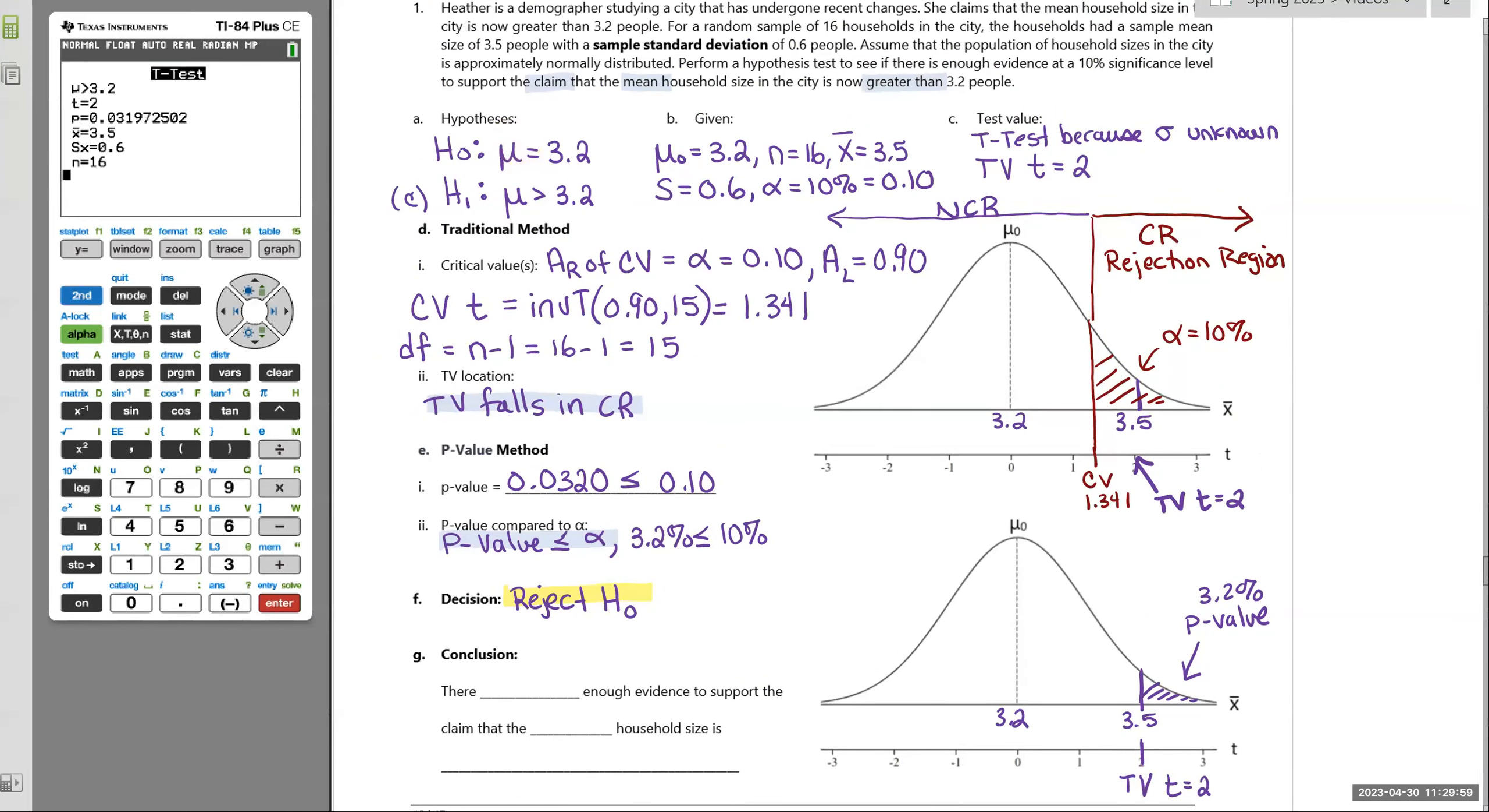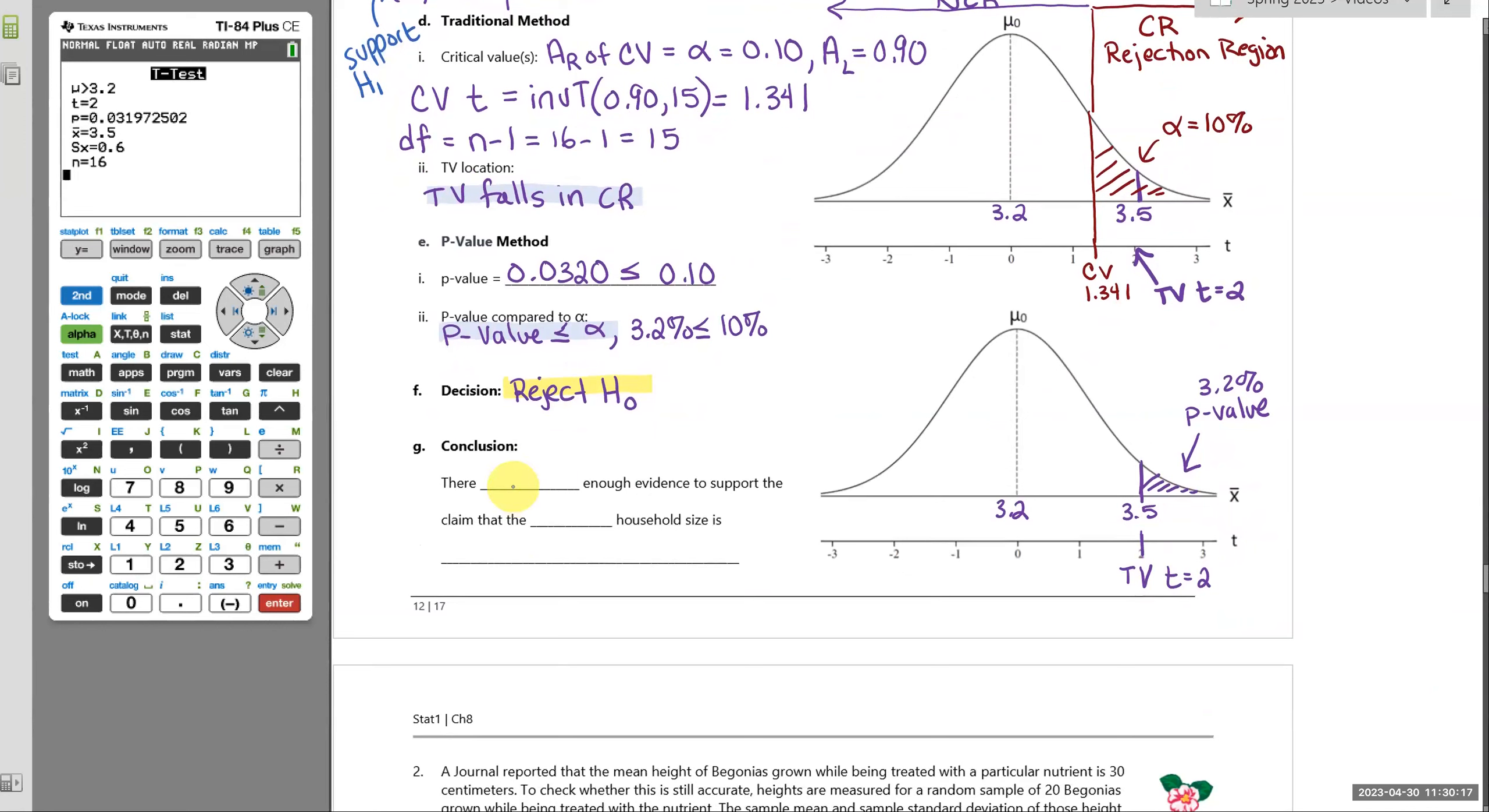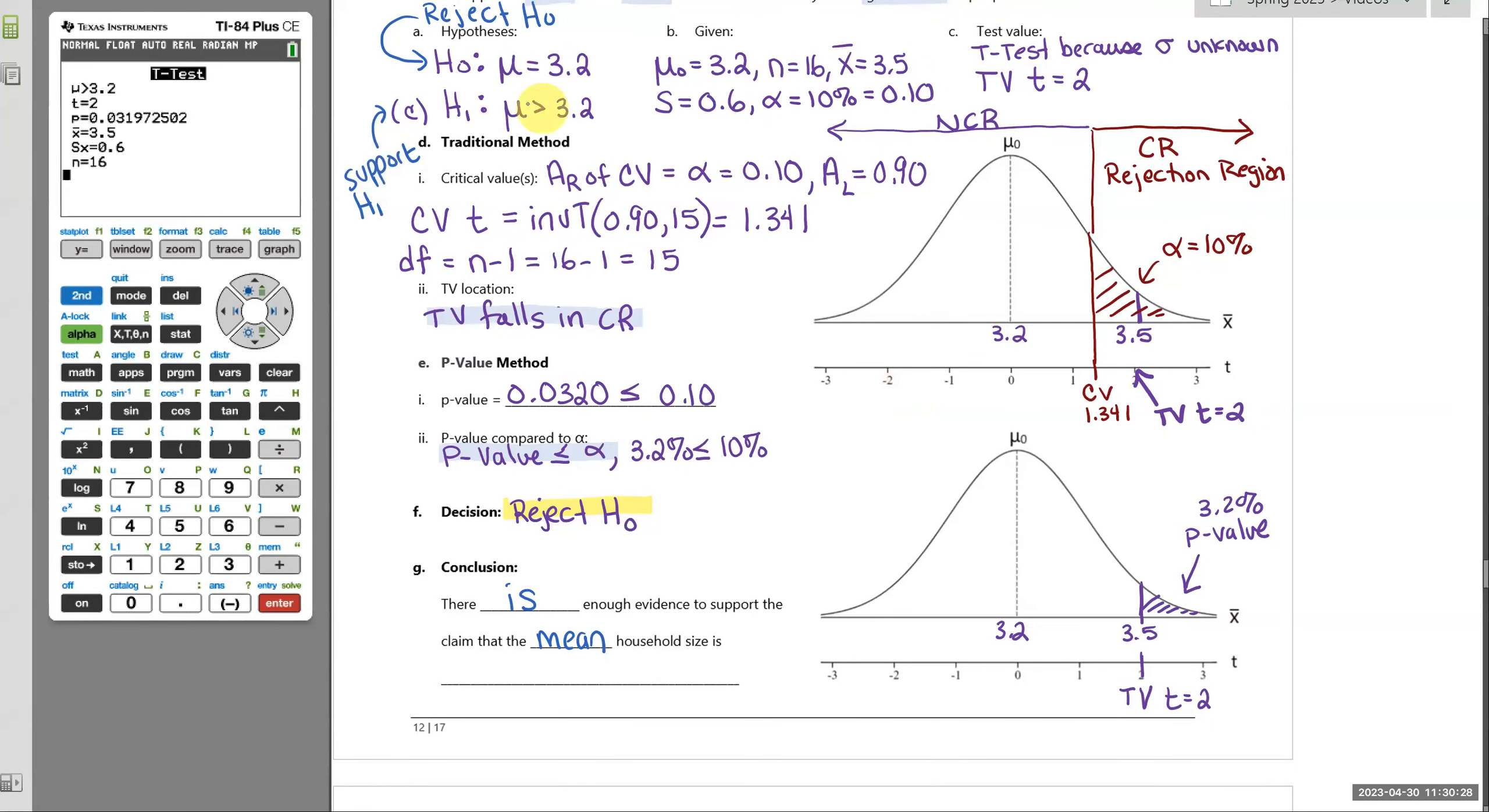And then as always, when you reject the null hypothesis, you are supporting H1, which is our claim. So our summary is, we are supporting our claim. There is enough evidence to support the claim that the mean household size in the city is greater than 3.2 people. So 3.5 was far enough above 3.2 to make me think that this is not really the mean, the mean for the city is actually higher.